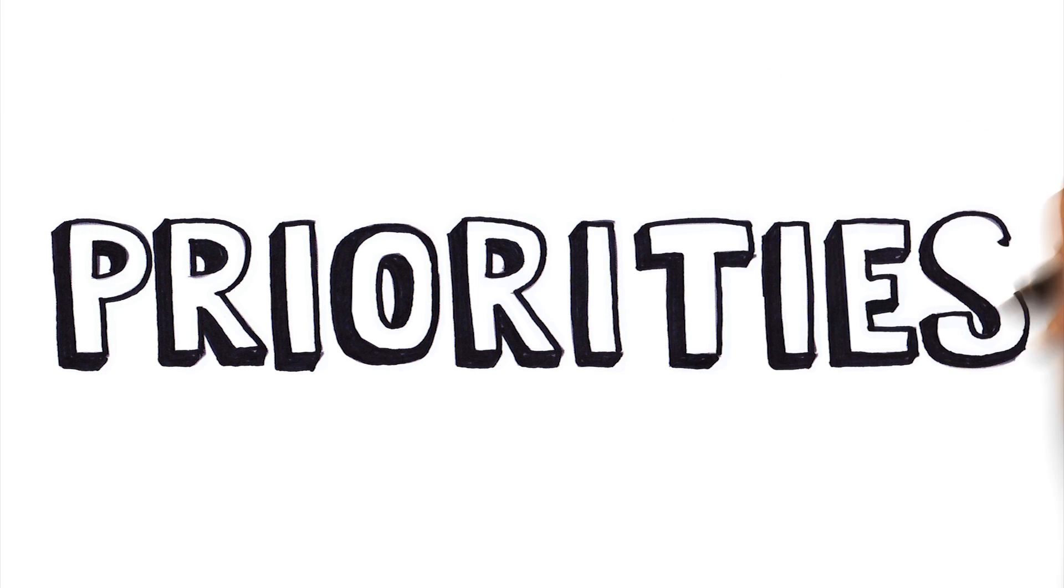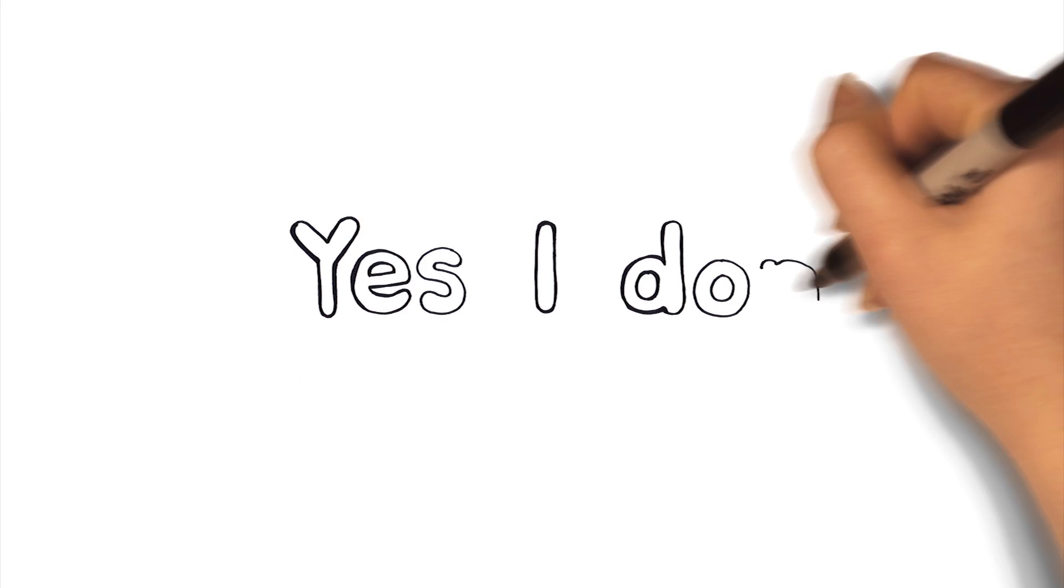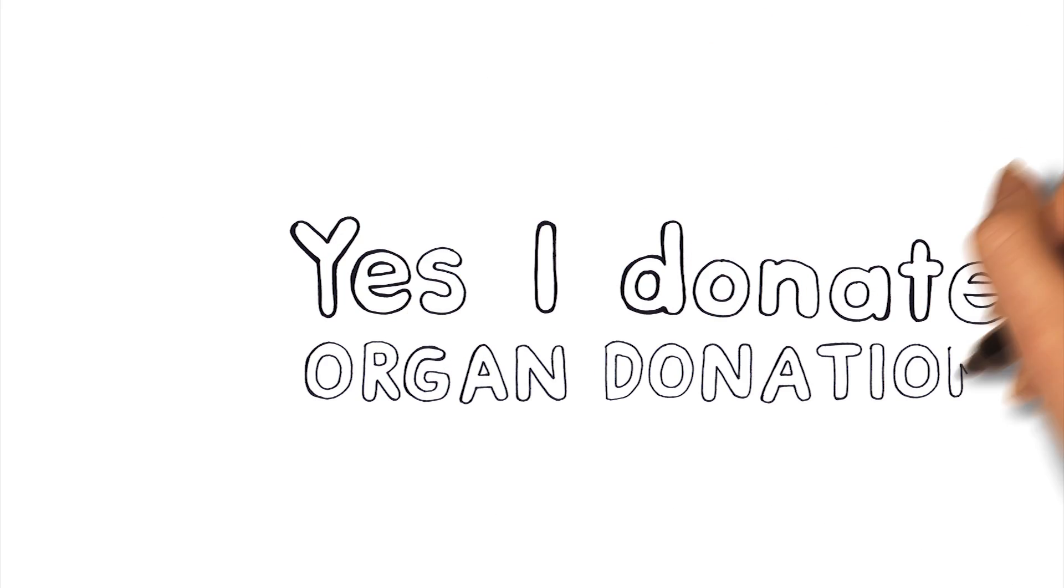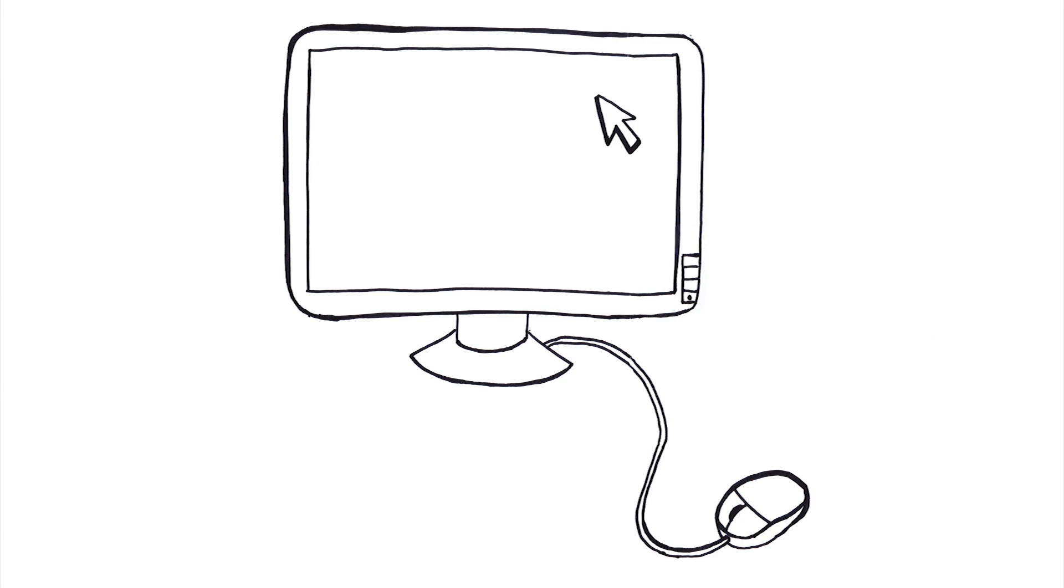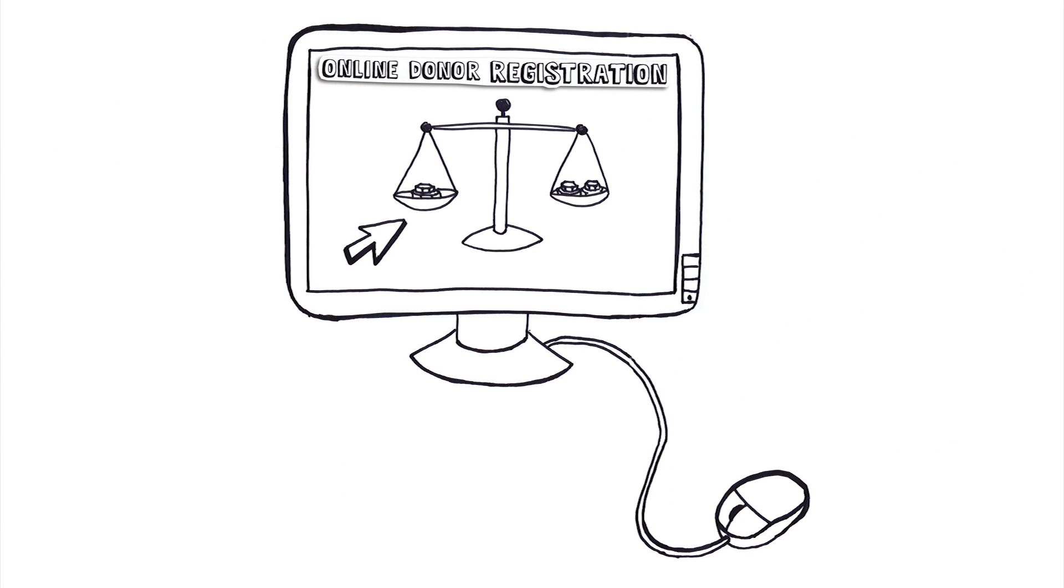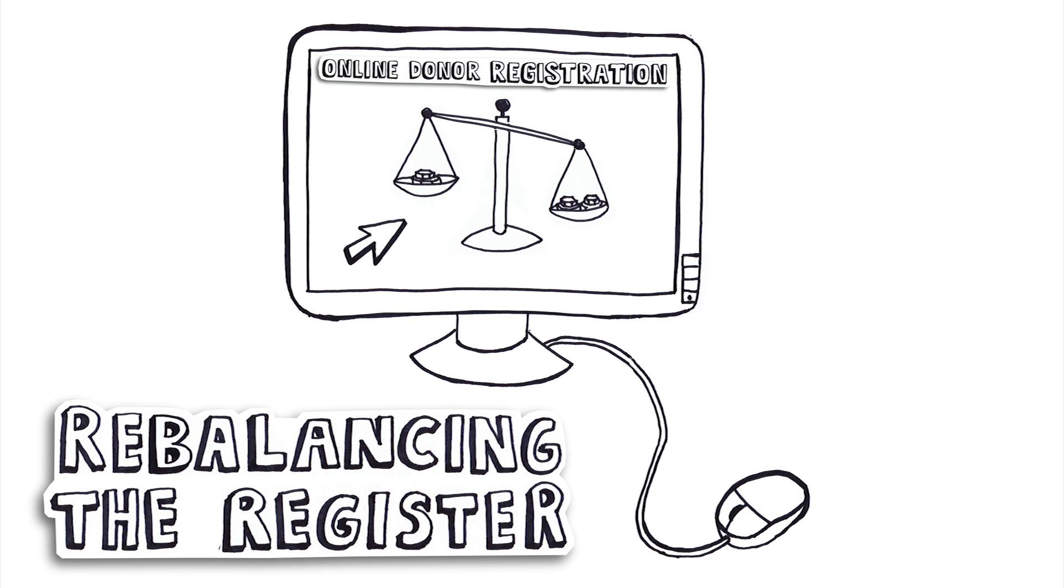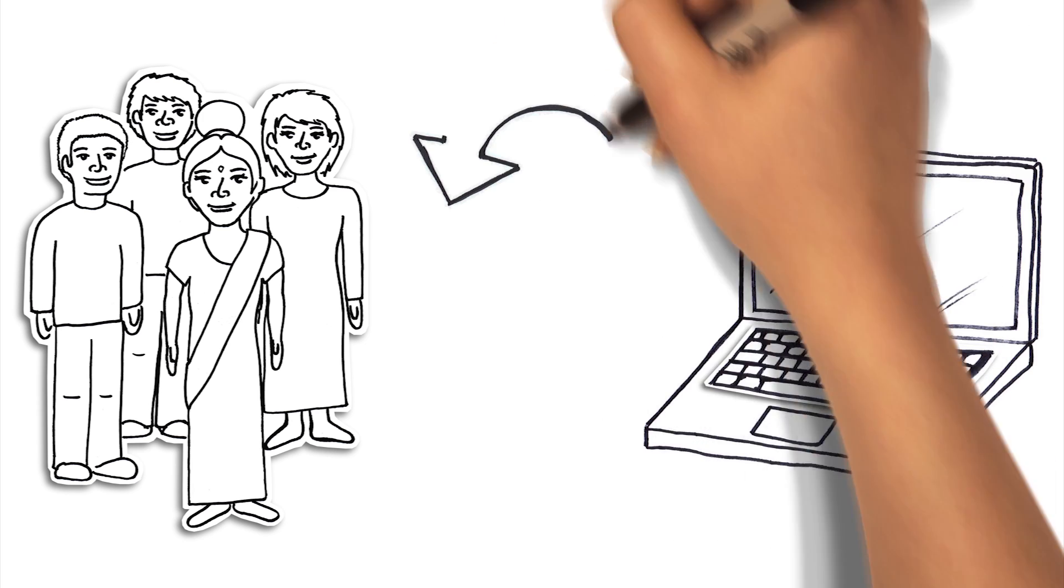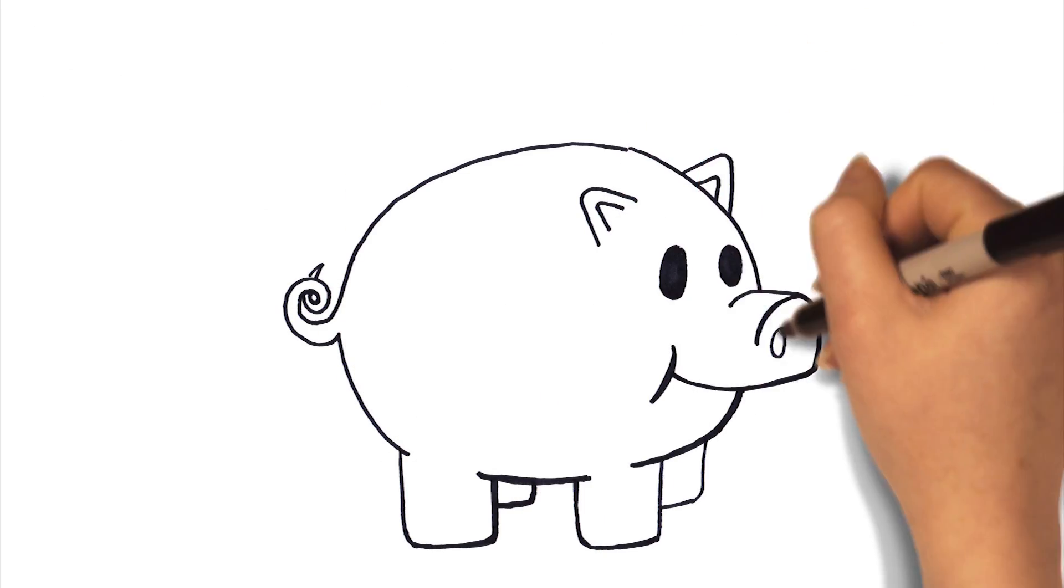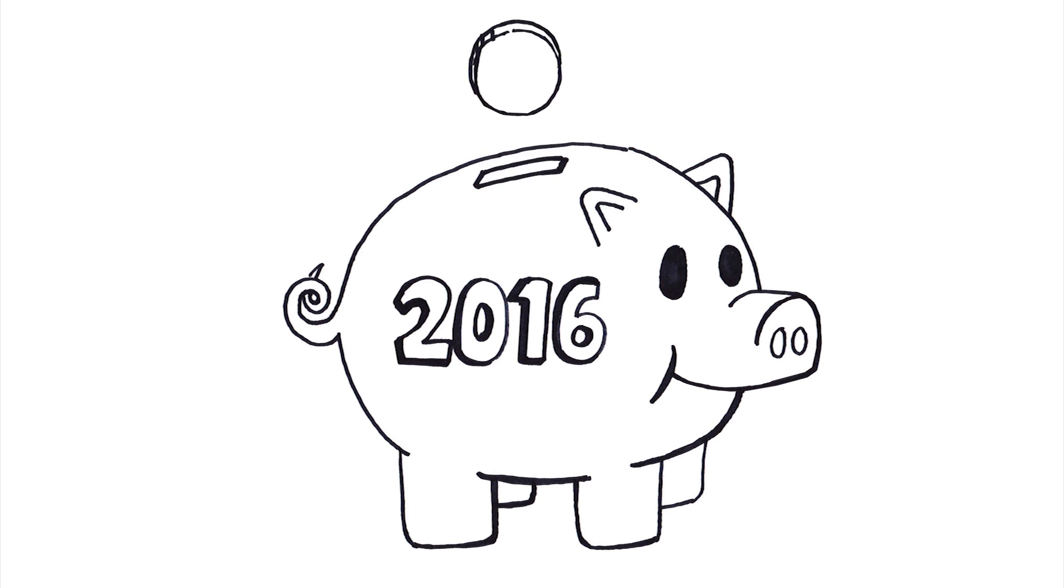Our priorities this year are to continue to change public attitudes to donation in the UK, continue to increase the number of new registrants on the organ donor register and ensure those more likely to donate are a higher proportion on the register. To make this happen we'll invest in our people, our IT and processes. A funding model will also be designed to support our ambitions until 2020.